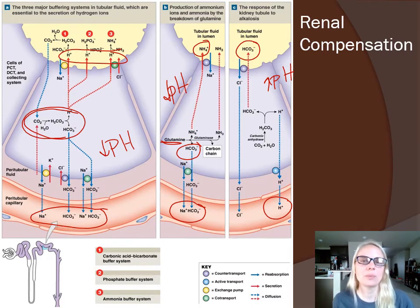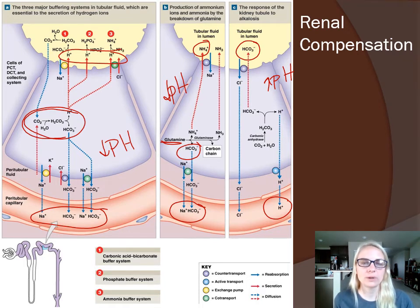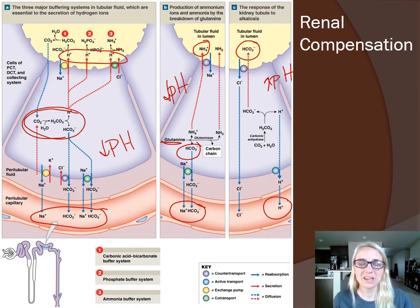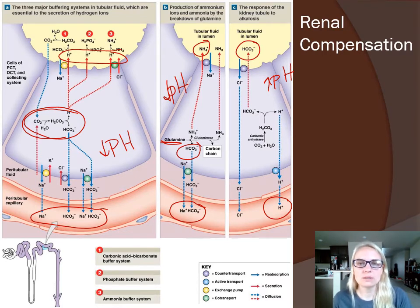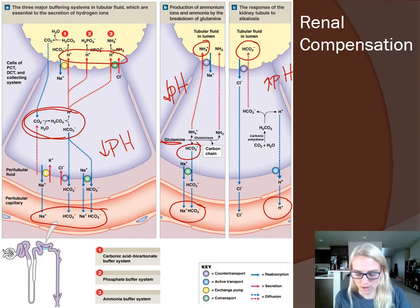When we talk about these compensatory mechanisms, the respiratory response is a lot quicker. The renal response is a little bit slower, but it can handle a larger magnitude. Your respiratory system can kick in right away but can only do so much, whereas the renal system takes a little bit of time to get started but can handle a pretty big difference in pH imbalances.